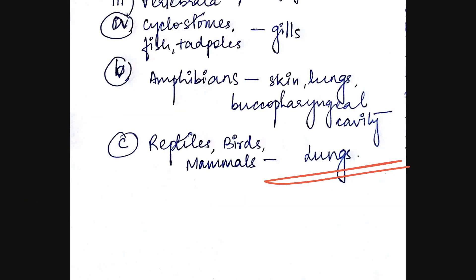So this was all about the various respiratory organs in the different phyla of the animal kingdom. I hope you understood well. If you have any queries, feel free to ask them. Good luck.